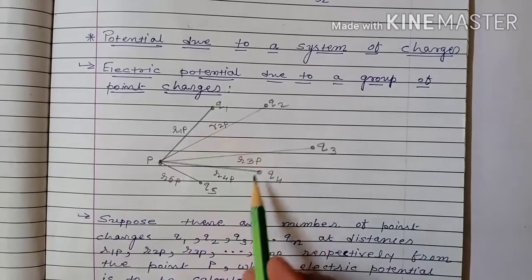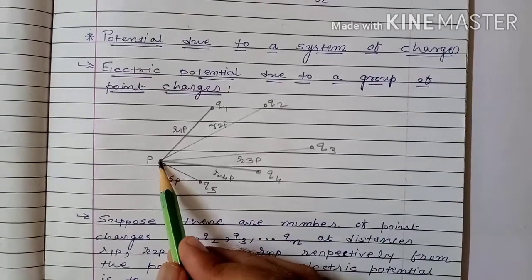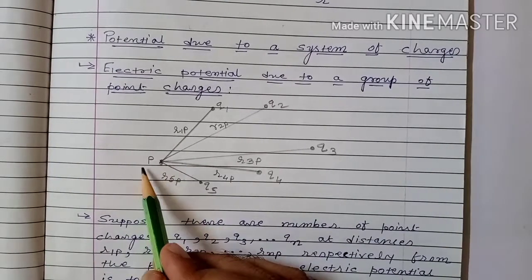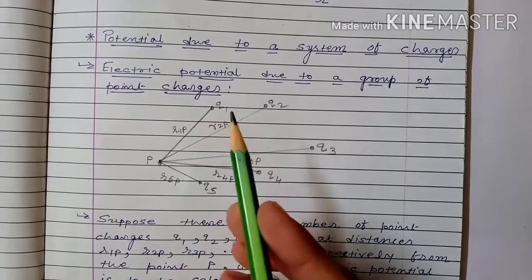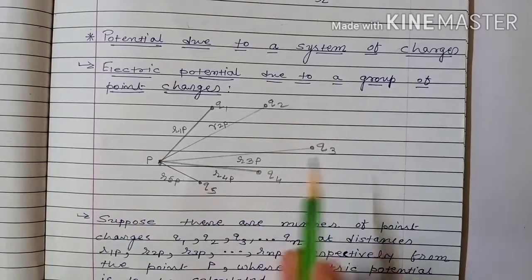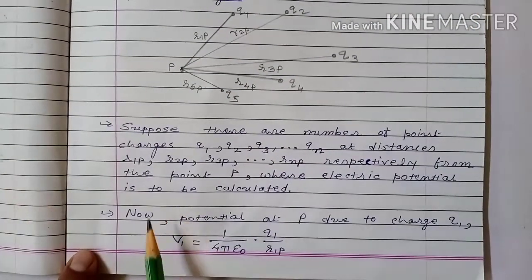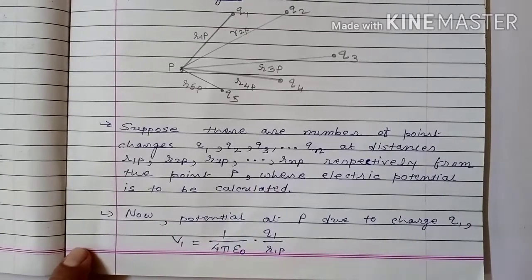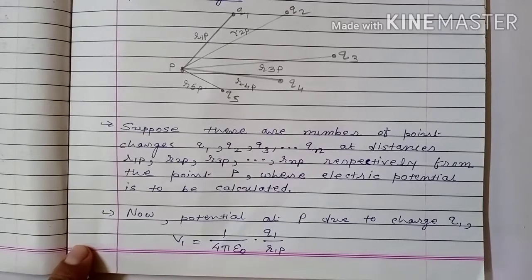If we have a system of n charges and want to calculate the electrostatic potential due to these n point charges at some point P, then first we calculate the electrostatic potential due to charge Q1, then Q2, then Q3 and so on. Potential at point P due to charge Q1 is 1 upon 4π ε₀ into Q1 upon R1P.